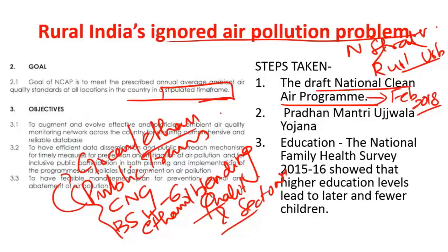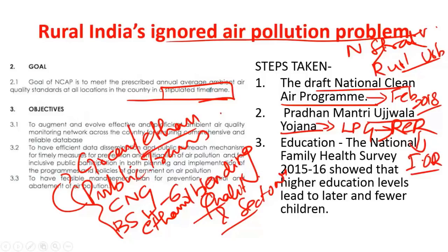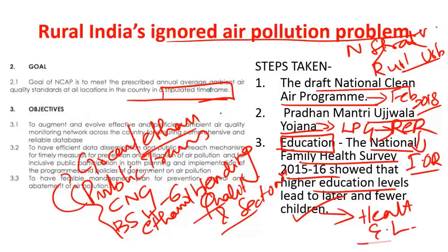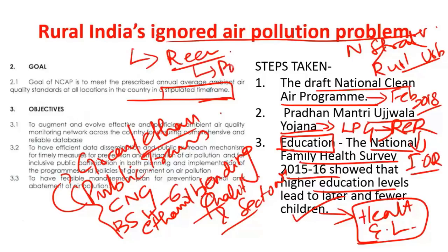The second initiative targeting rural populations is the Pradhan Mantri Ujjwala Yojana, which aims to increase LPG usage in rural areas, thereby reducing respiratory diseases especially for women and tackling indoor air pollution. The third important factor is education — the National Family Health Survey 2015-16 showed that higher education levels lead to fewer children, which increases the health and economic level of Indian families. It is high time that rural air pollution is recognized as a serious issue and the government implements policies to tackle it for inclusive growth.